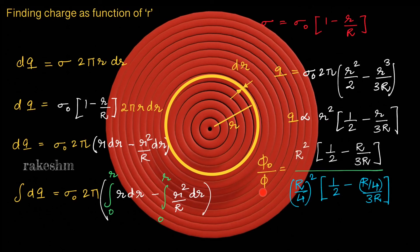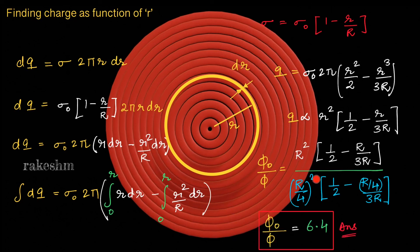Since flux is proportional to charge enclosed, we can write phi_0 by phi directly. phi_0 corresponds to a sphere of radius R, giving R² * (1/2 - R/(3R)) = R² * (1/2 - 1/3). phi corresponds to a sphere of radius R/4, giving (R/4)² * (1/2 - (R/4)/(3R)). Simplifying this ratio gives phi_0 by phi equals 6.4, which is the answer.